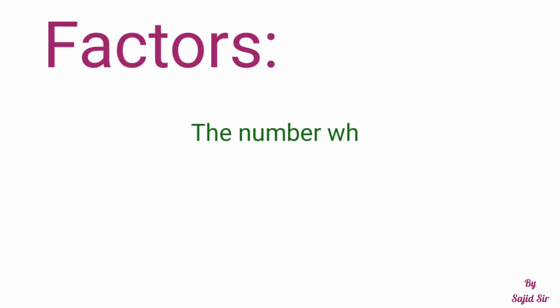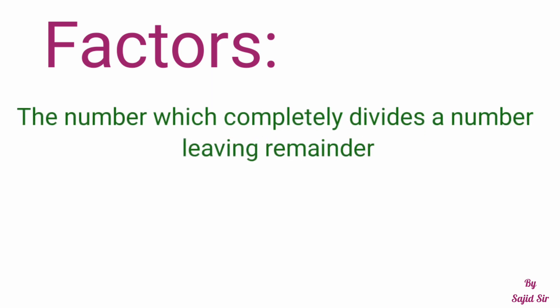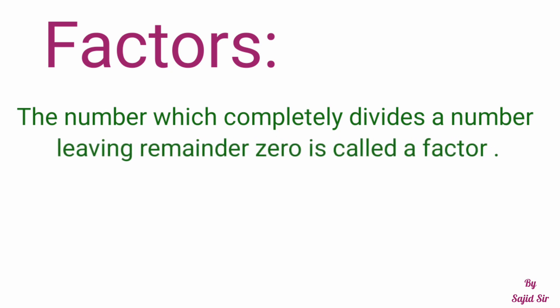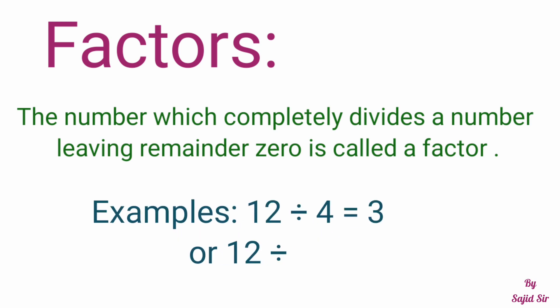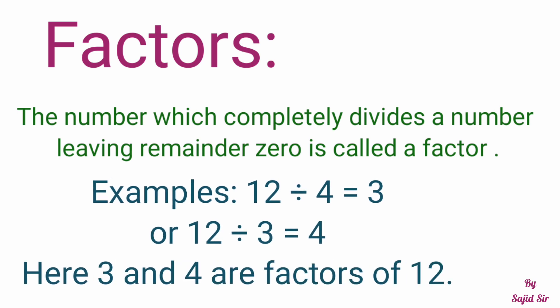Factors: The number which completely divides a number leaving remainder 0 is called a factor. ऐसा number जो किसी number को completely divide करे और remainder 0 आता हो, तो ऐसे number को हम factor कहते हैं। For example, 12 ÷ 4 = 3 और 12 ÷ 3 = 4. So, here 3 and 4 are the factors of 12. यहां 3 और 4 से 12 completely divide होता है, so 3 और 4, 12 के factors हैं।